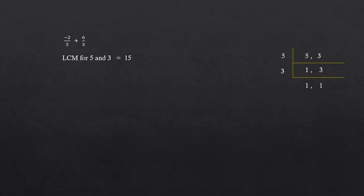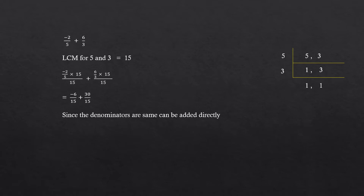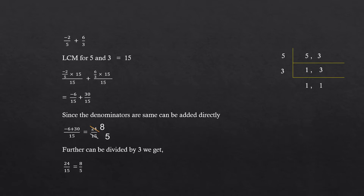Since denominators are different, we have to find the LCM of 5 and 3, which is equal to 15. Now we will multiply and divide both the fractions with 15: minus 2 by 5 into 15 whole divided by 15 plus 6 by 3 into 15 whole divided by 15, which is equal to minus 6 by 15 plus 30 by 15. Now the denominators are same, so we can add the numerator keeping the denominator: minus 6 plus 30 whole divided by 15, which is equal to 24 by 15. We can reduce it to 8 by 5.